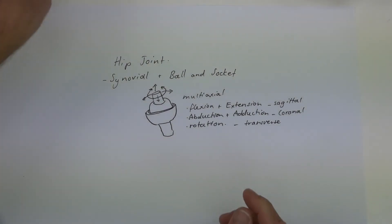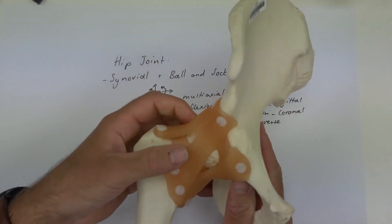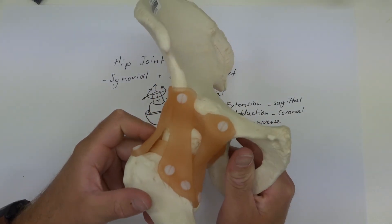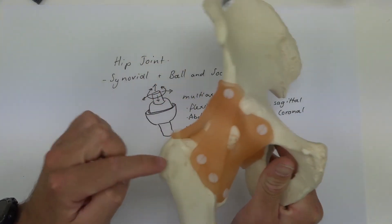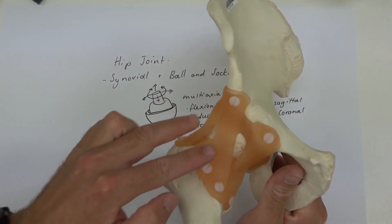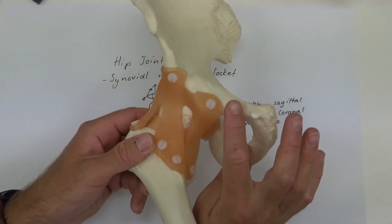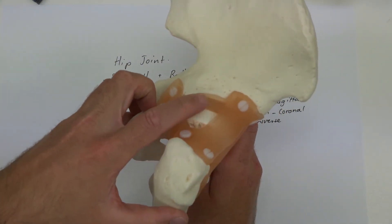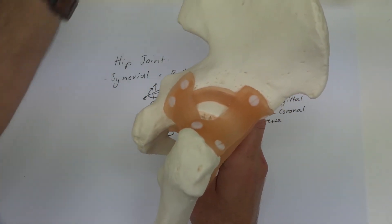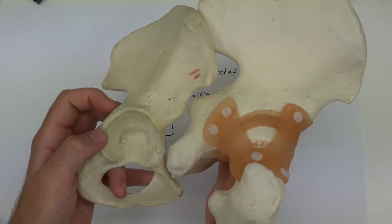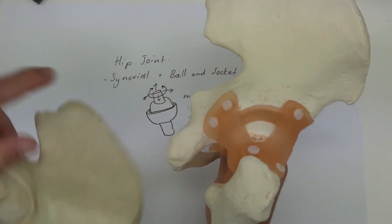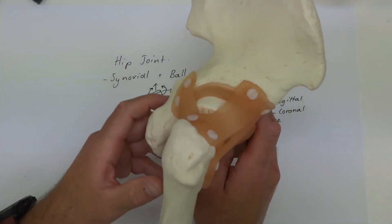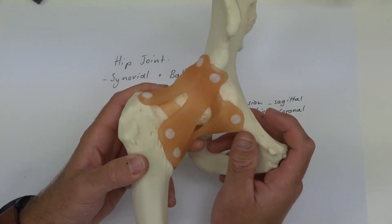Supporting structures around the hip joint include very thick, strong ligaments forming the fibrous capsule. These are named according to which part of the pelvis they originate from: the iliofemoral ligaments come from the ilium, the pubofemoral comes from the pubis, and the ischiofemoral comes from the ischium posteriorly. A rim passing around the top of the acetabulum — called the labrum — acts like a suction cup, extending the capsule and keeping the head of the femur well inside the acetabulum.